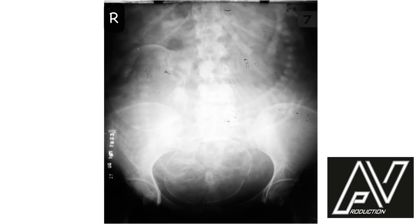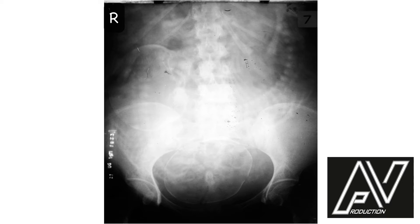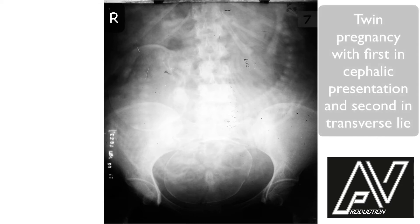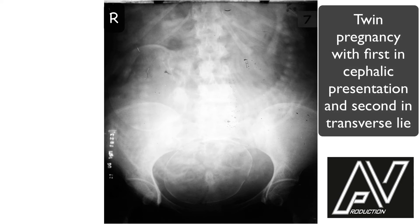This is a plain x-ray of the abdomen and pelvis, AP view, well centralized, well exposed, showing two fetuses. The first twin is in longitudinal lie, flexed attitude, cephalic presentation, and the second twin is in transverse lie, right dorso-inferior position. There is no discordancy in fetal size. There are no obvious fetal skeletal defects. Therefore, my diagnosis is twins with twin A in cephalic presentation and twin B in transverse lie.